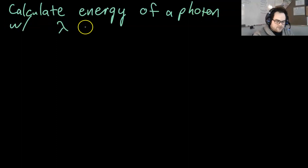So, first we want to calculate the energy of a photon with wavelength equal to 6.4 times 10 to the negative 7 meters. So, let's see what we've got.